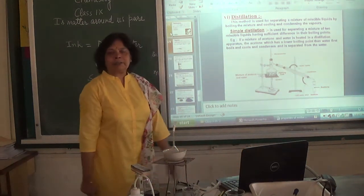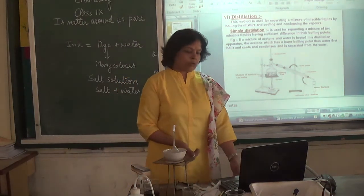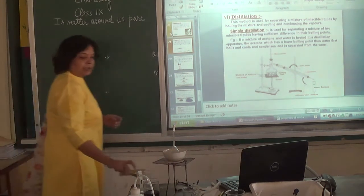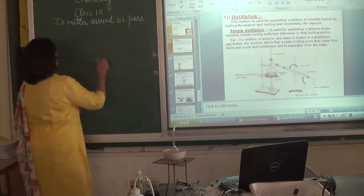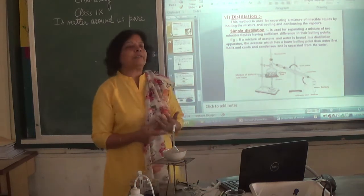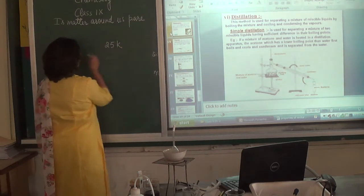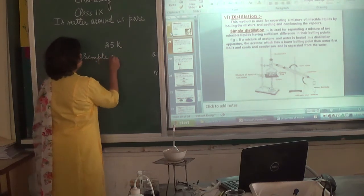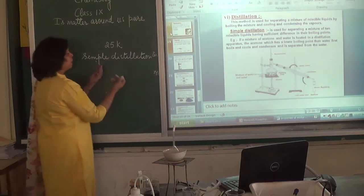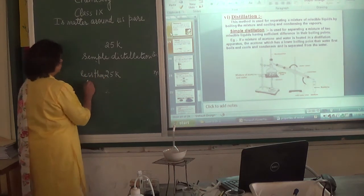Distillation can be done for any type of solution, including a solution of two miscible liquids. The principle involved is: if two components have different boiling points and the difference is more than 25 Kelvin, we use simple distillation. If the difference in boiling points is less than 25 Kelvin, we use fractional distillation.